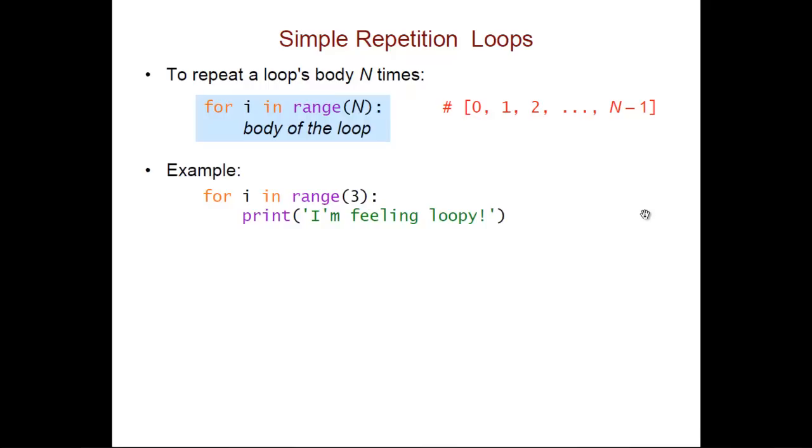So for example, if I have this loop, because I have range 3, that's equivalent to the list 0, 1, 2, and so I will end up printing, I'm feeling loopy, 3 times.